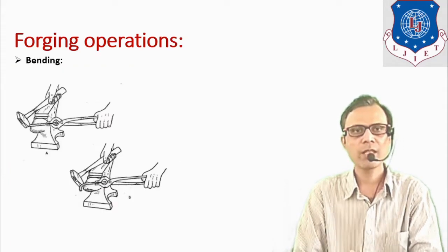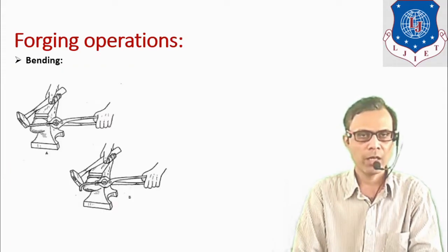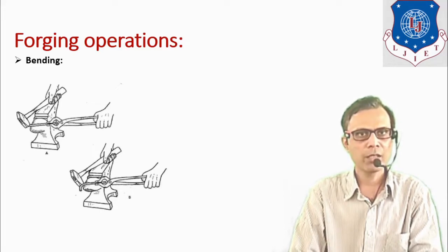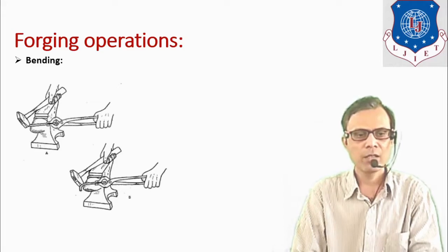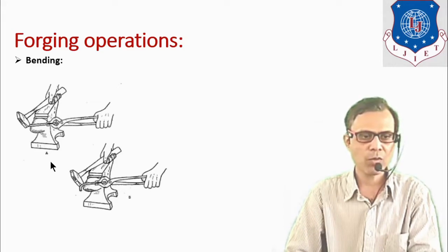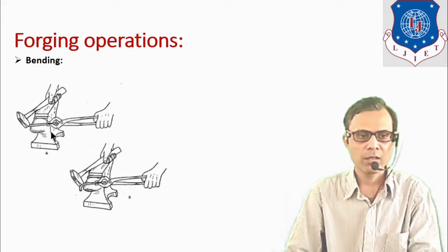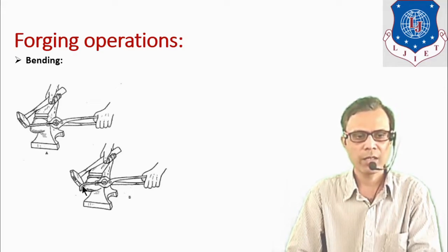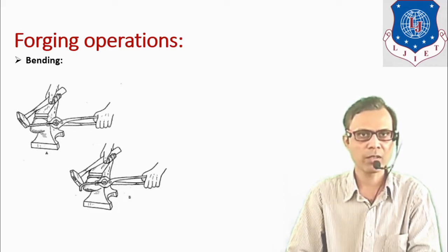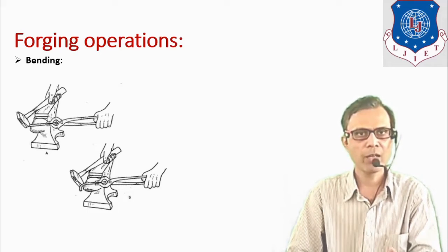The next operation is the bending operation, which is performed by a hammer and an anvil. The anvil is used to support the workpiece, and a hammer blow is given at the particular location to perform the bending operation. By bending operation, coils can also be formed.